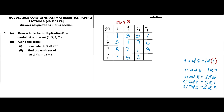Finally, 7×7=49, and 49 in mod 8: 8 goes into 49 six times (8×6=48), and 49 minus 48 gives remainder 1. So 7×7=1 in mod 8. We are now done with the multiplication table in modulo 8 on the set {1, 3, 5, 7}. This completes part (a) of the question.